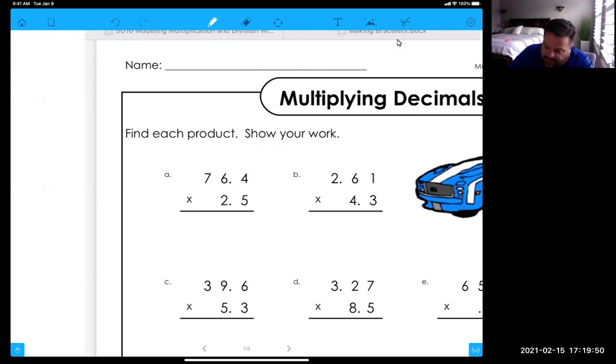Okay, so if you solved a, you're going to do it just like a regular multiplication problem. Five times four is 20, regroup the two. Five times six is 30, plus two is 32, regroup the three. Five times seven is 35, plus the three is 38. Take away these so I don't get confused.